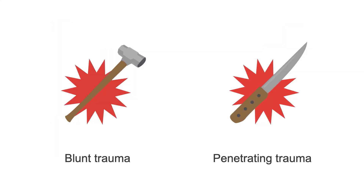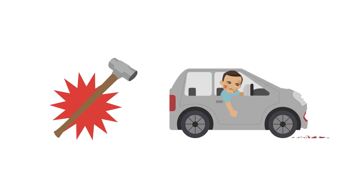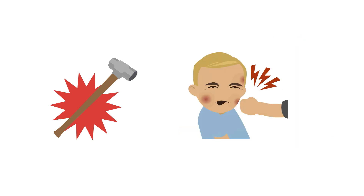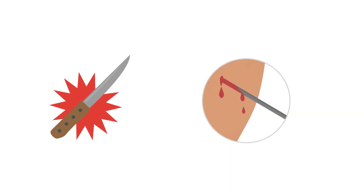We can broadly classify trauma as blunt or penetrating. Blunt trauma includes injuries from motor vehicle accidents, falls, sports, and assaults. Penetrating trauma includes gunshot, knife wounds, and other objects which pierce the skin and cause internal injury.